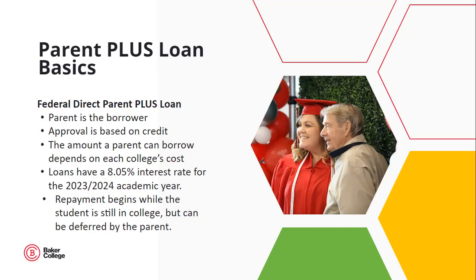The parent would need to work with the lender to defer payments. If the option to defer payments is selected, we still encourage the parent to pay the interest while the student is in college. In 23-24, Parent PLUS Loans have an interest rate of 8.05 percent. Schools will have different Parent PLUS Loan processes, so if you need to borrow a Parent PLUS Loan, please consult with the school on their process. Many schools direct students to studentaid.gov to apply.